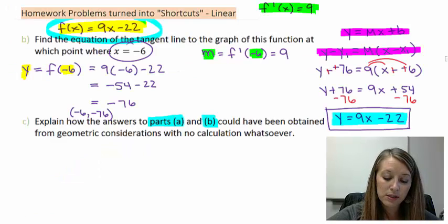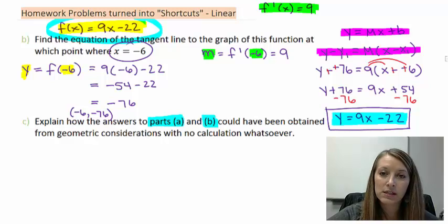That answers part c here. How could it be obtained from geometric consideration? Well, because we have a linear equation, our tangent line is going to be identical to our original equation.